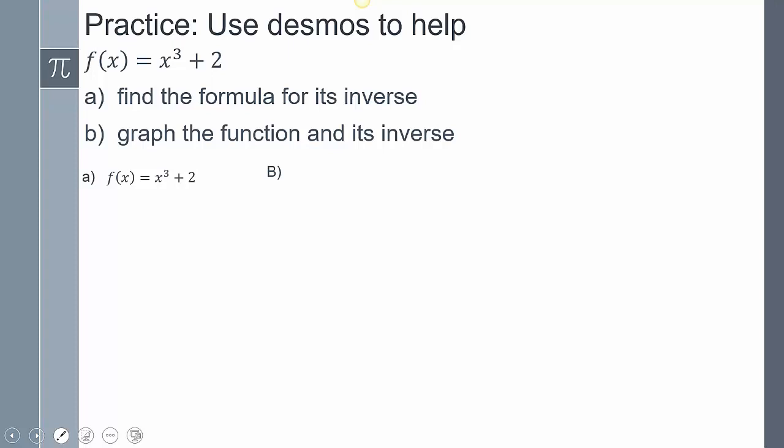All right. So let's go over it. So on part A, define the formula of its inverse. Remember, we're going to switch the x and y. And we've got to get y by itself. So subtract 2 on both sides. Cube root both sides. Y is by itself. Use my inverse notation because this is a function still. And so that right there is going to answer A. That is the formula for my inverse.